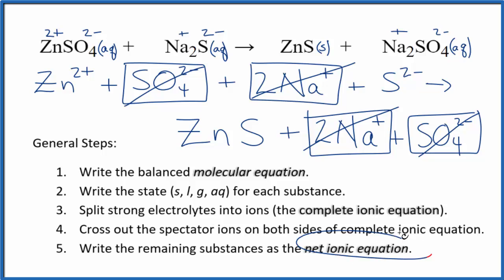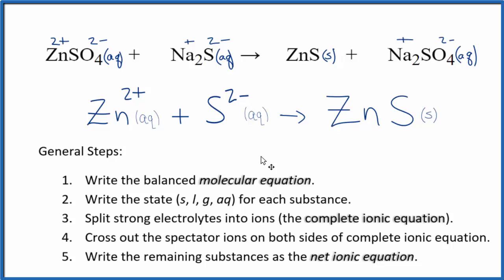What's left? That's the net ionic equation for ZnSO4 plus Na2S. I'll clean it up, write the states in. We'll have our net ionic equation. And this is the balanced net ionic equation for zinc sulfate plus sodium sulfide.